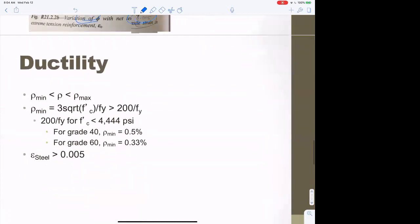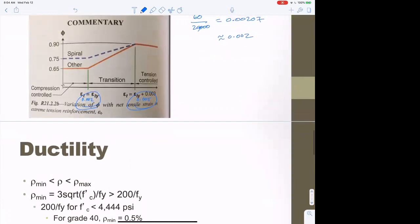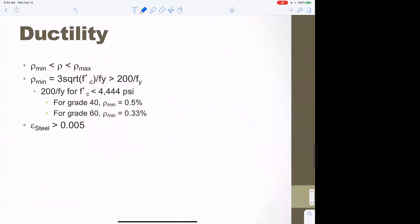That's the maximum amount of steel. If you stay less than the maximum we derived, corresponding to 0.005, you can use phi as 0.9. Also, you have to have a minimum amount of steel, otherwise the beam will fail as soon as you crack the concrete. There are two equations: 3√(f'c)/fy or 200/fy. When f'c is less than 4,444 psi, the 200/fy controls. Above that, you use the square root f'c equation. So that's ρ_min, and this one is ρ_max.